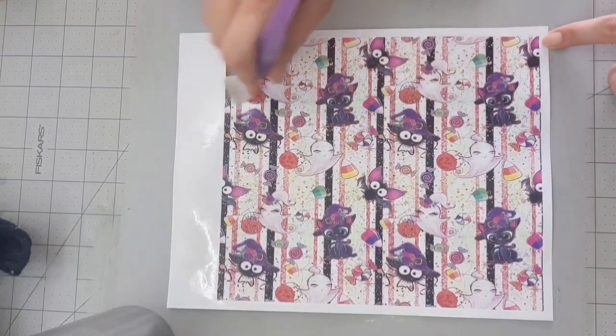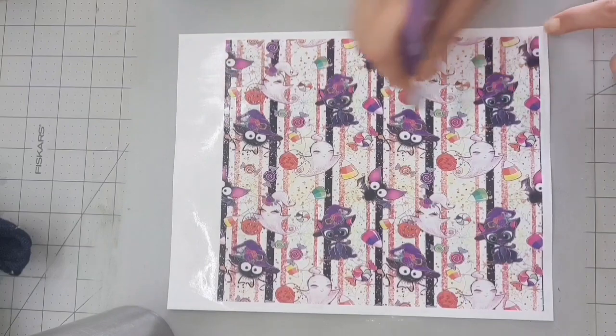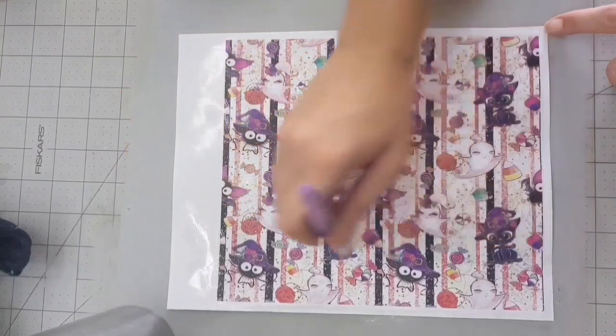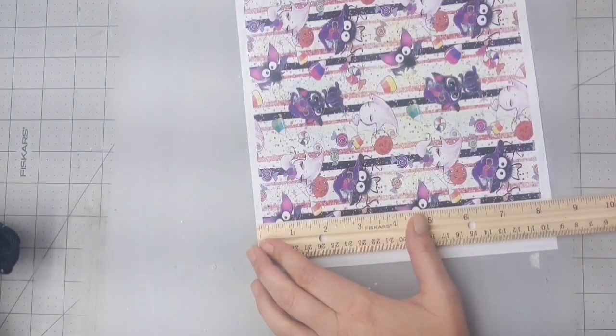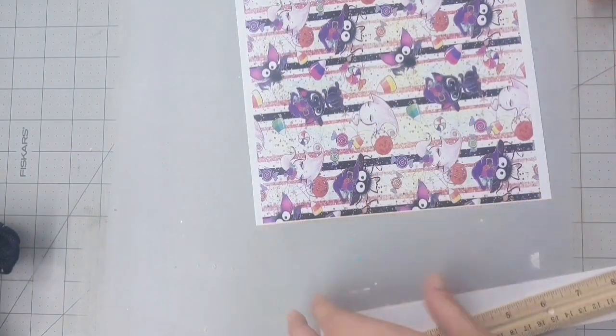You could definitely use a spray sealant but I think it's just going to give me a more durable piece of vinyl. I know that I'm not going to scrape any of that ink off, I'm not going to lose any of my images, and when I start maneuvering the vinyl it's going to be more durable if that makes sense.